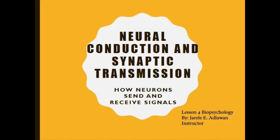I introduced you to the anatomy of neurons in Chapter 3. This chapter introduces you to their different functions — how neurons conduct and transmit electrochemical signals through the nervous system. We will start with a description of how signals are generated in a resting neuron, then follow the signals as they are conducted through neurons and transmitted across synapses to another neuron. It concludes with a discussion of how drugs are used to study the relation between synaptic transmission and behavior.